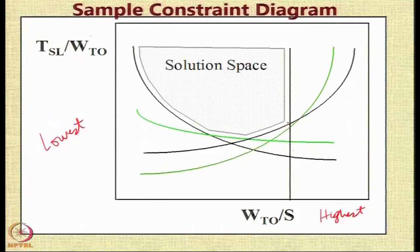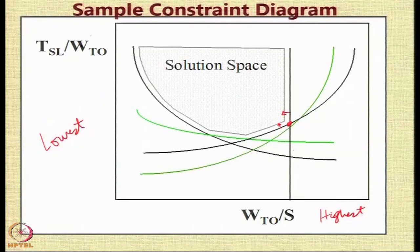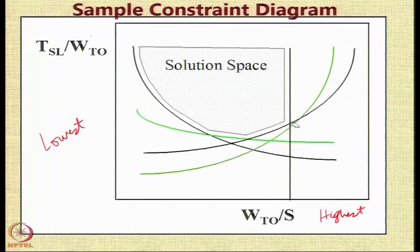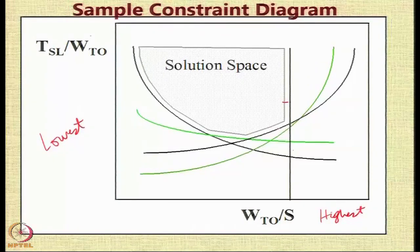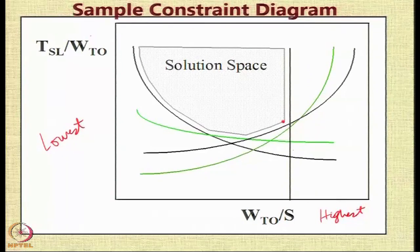We do not pick the absolute intersection point — a small margin is left to allow for growth, since requirements tend to creep and the aircraft picks up excess weight over its service life. Designing to the absolute optimum could soon put the aircraft outside the feasible space. So a little bit lower W/S and a little bit higher T/W is always used, and the design point is taken slightly inward from the absolute intersection point.